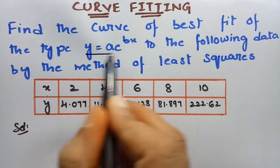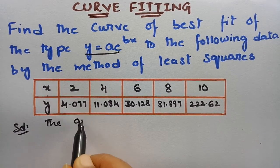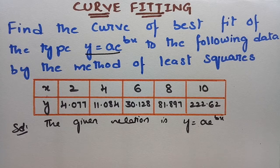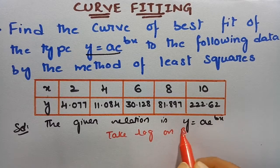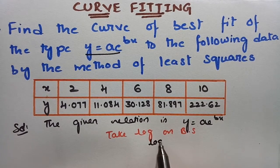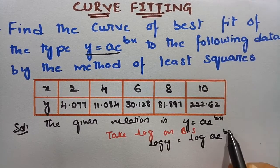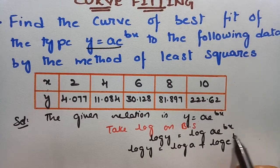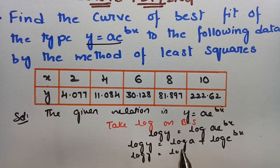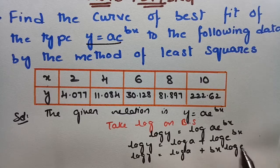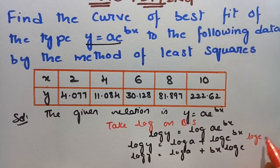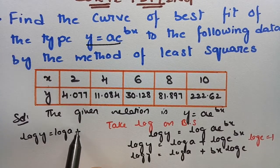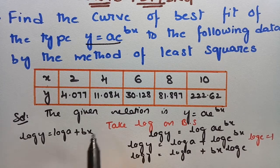The given relation is y = a·e^(bx). We have to take log on both sides. So if I take log on both sides: log y = log(a·e^(bx)), which gives log y = log a + log(e^(bx)), which equals log a + bx·log e. Since log e = 1, we get log y = log a + b·x. This is equation 1.